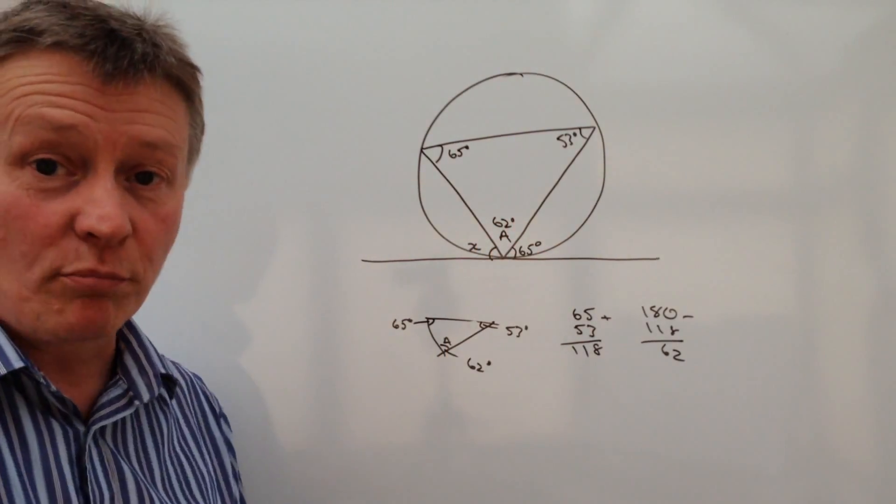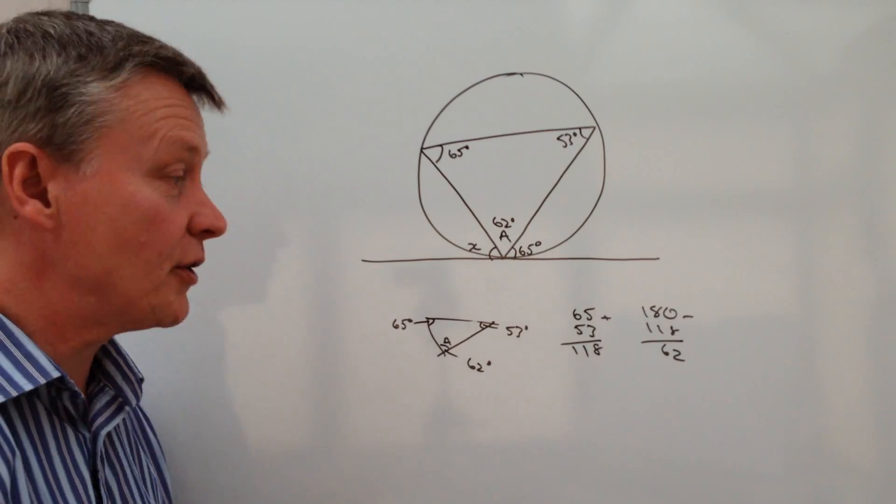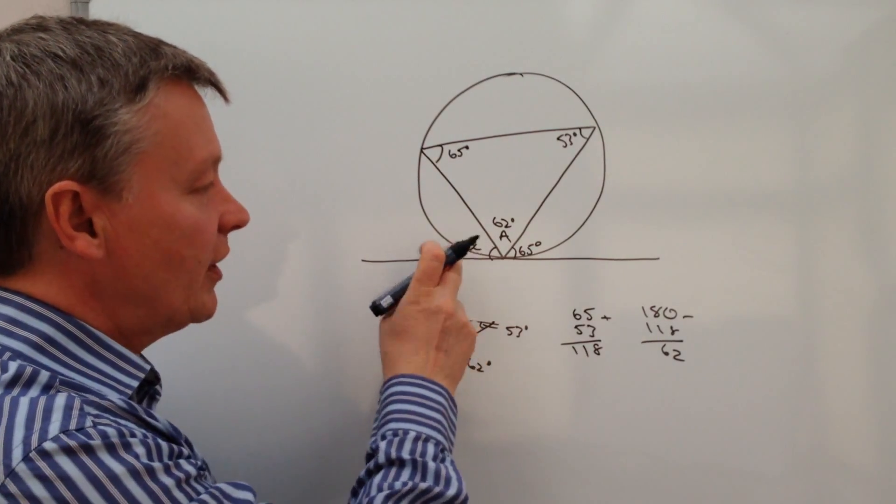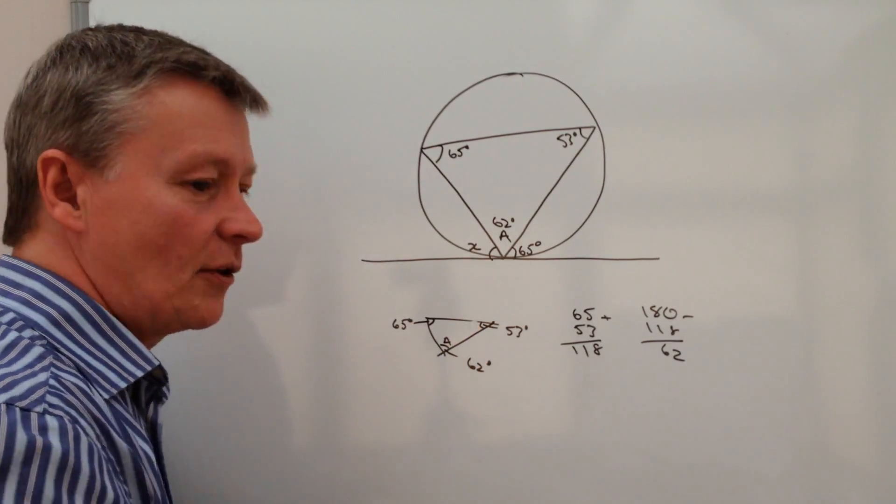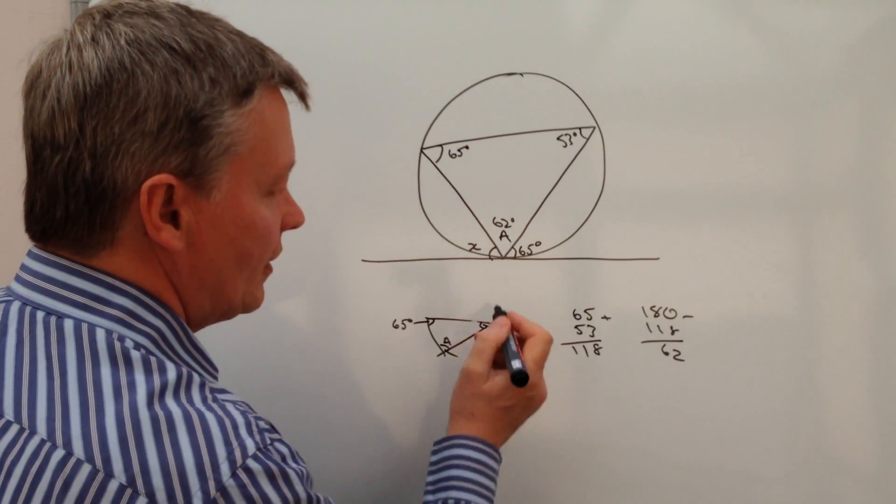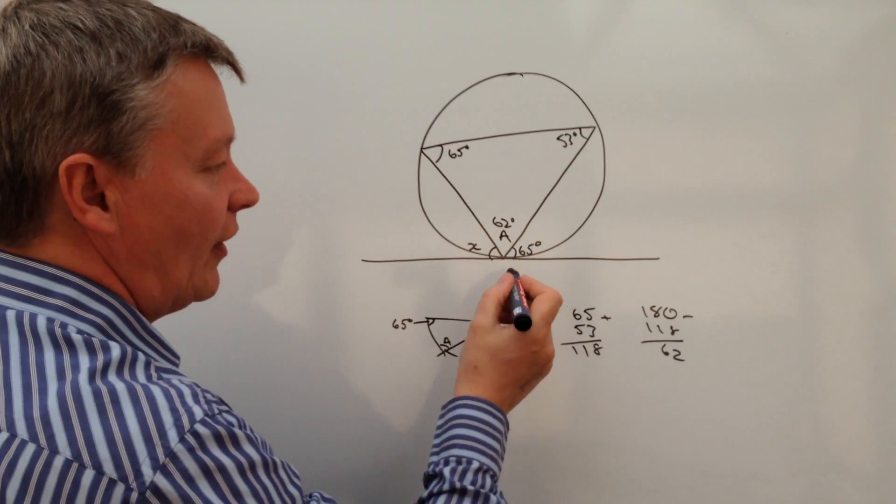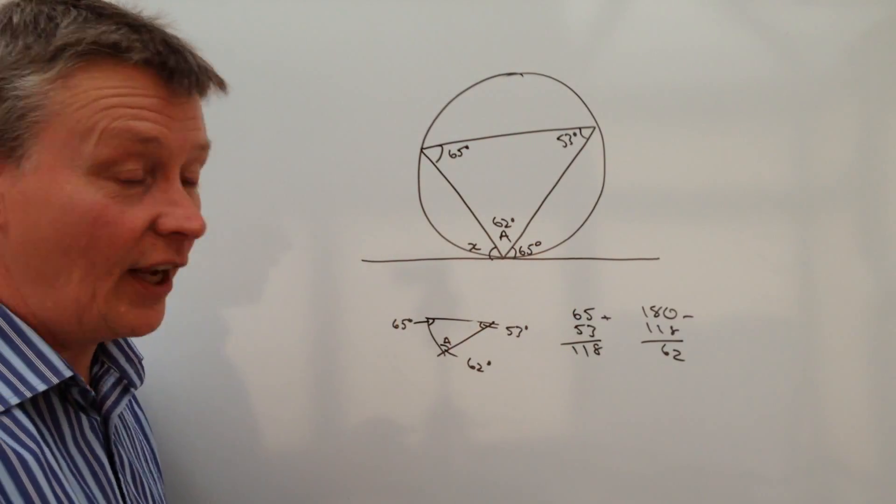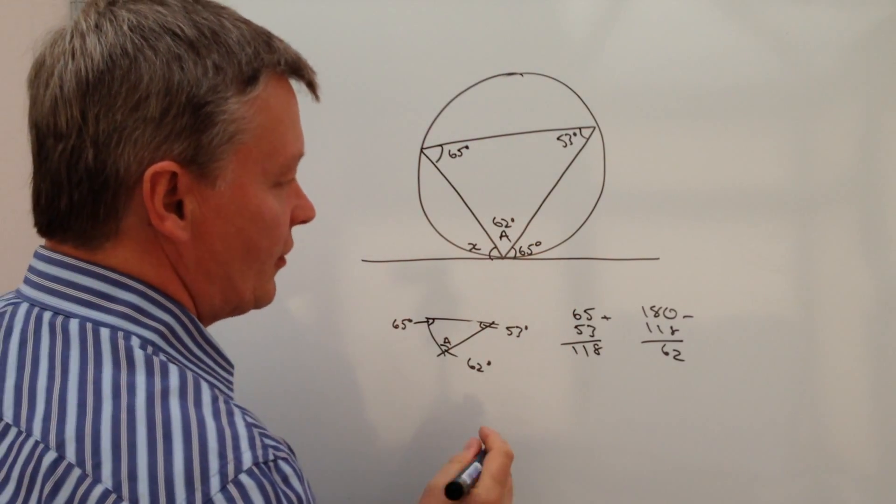Which means this angle here is 62 degrees. Well, that's brilliant because I can use that information now—that will allow me to work out the value of x. So what I've got is 62 plus 65, and I take that away from 180.